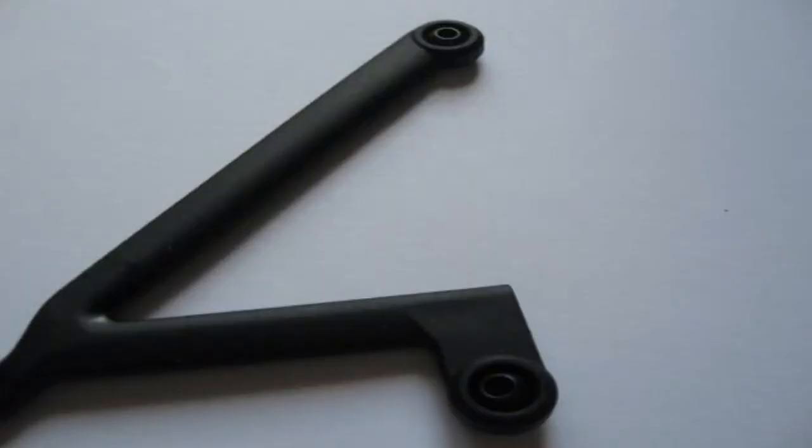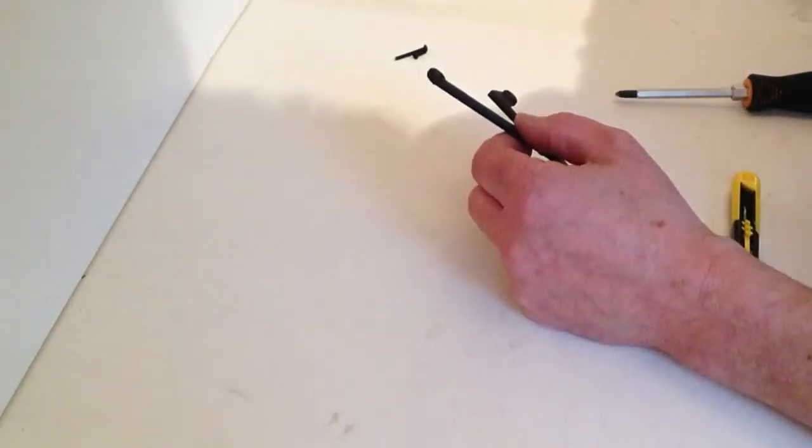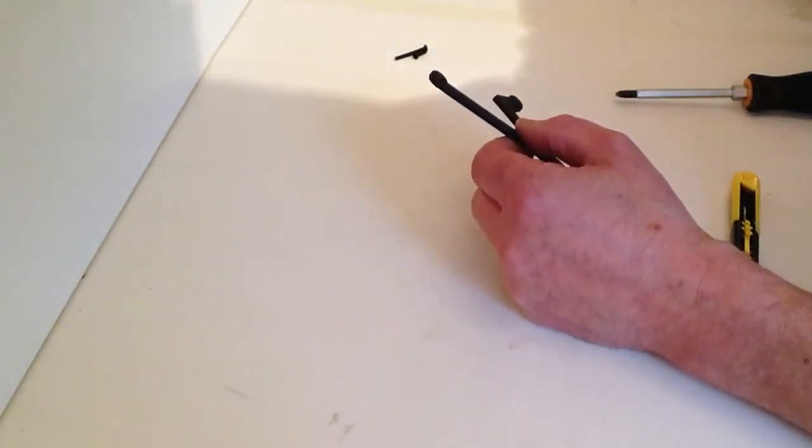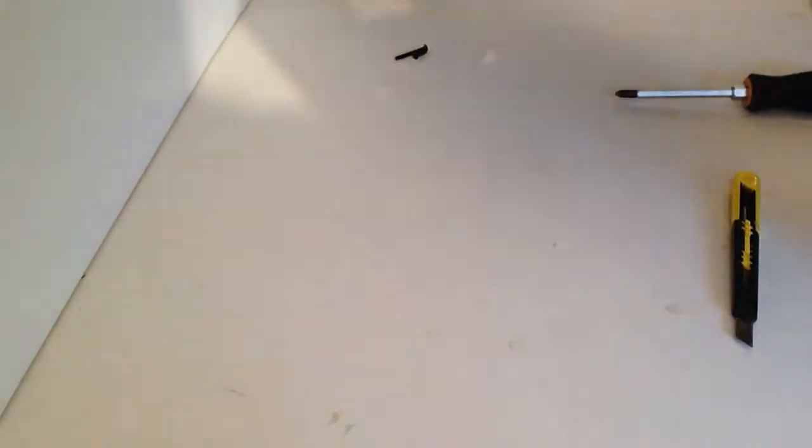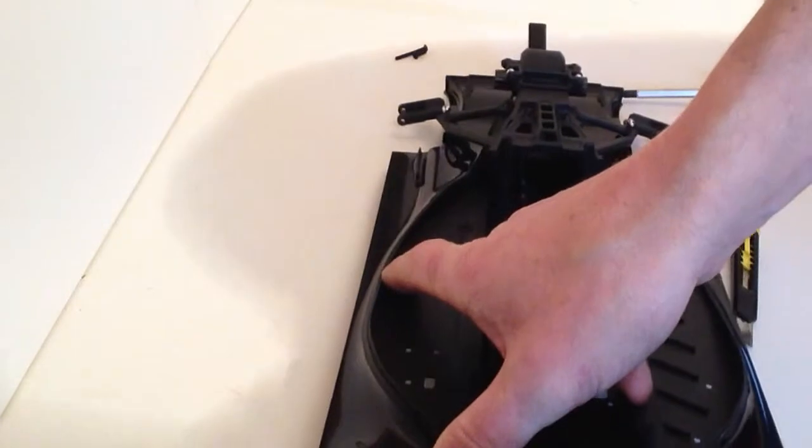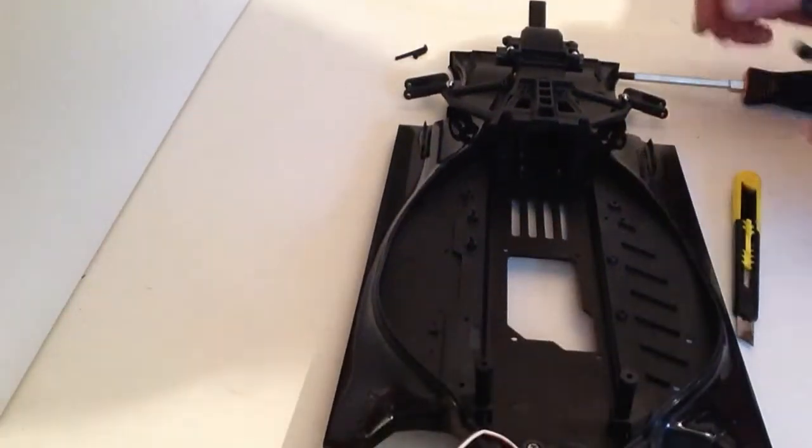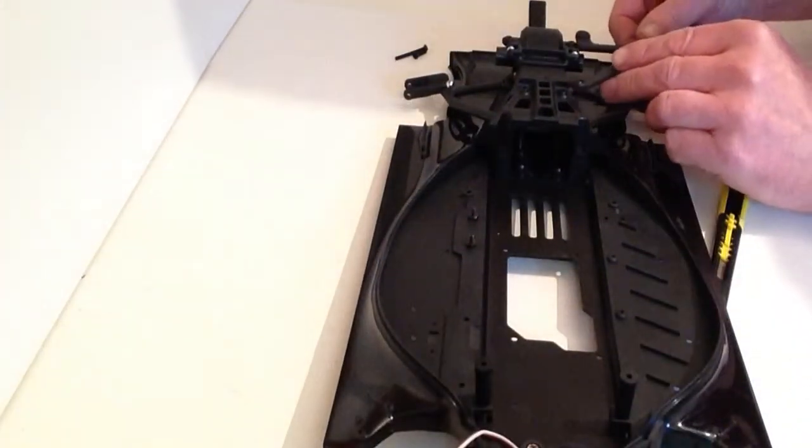You can use tweezers if you don't want to press down like that. Then take your chassis and you'll notice that we're going to be placing the arm.